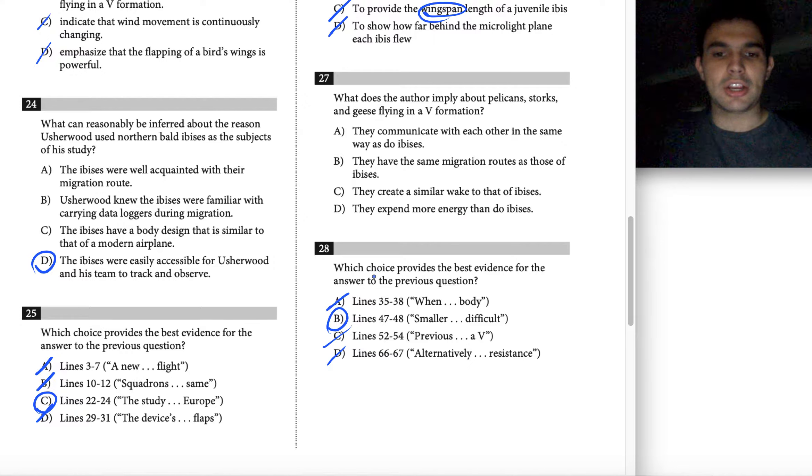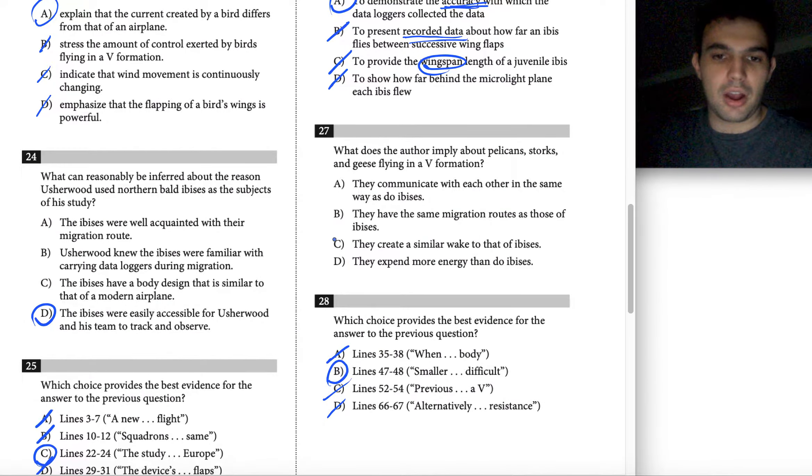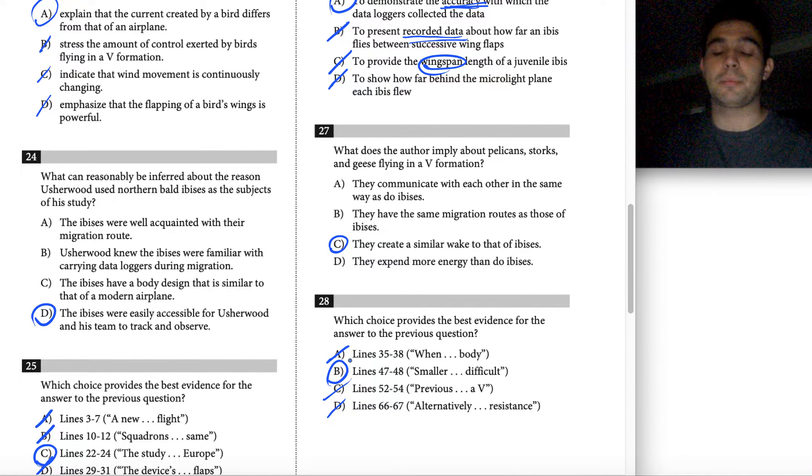Now, let's take a look at how B might inform question 27 up here. As I mentioned, it has something to do with the wake, right? The smaller birds have a different wake, a more complicated wake. If we look at our answer choices here, there's only one that really lines up with that, that they create a similar wake to that of ibises. Let's just confirm that that's correct. If we go back up to our paragraph, it says the findings likely apply to other long-winged birds such as pelicans, storks, and geese, Usherwood says. Smaller birds create more complex wakes that would make drafting too difficult. All right, confirmed, right? The smaller birds create a different wake, but the pelicans, storks, and geese create a similar wake in that they are all long-winged birds. So 27 is definitely going to be choice C for that reason and how it lines up with choice B in question 28.